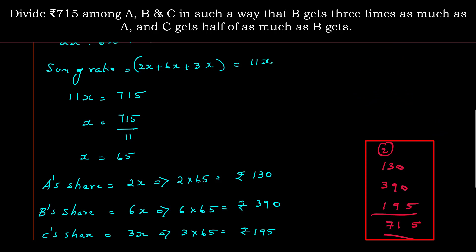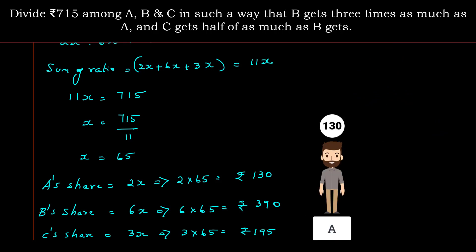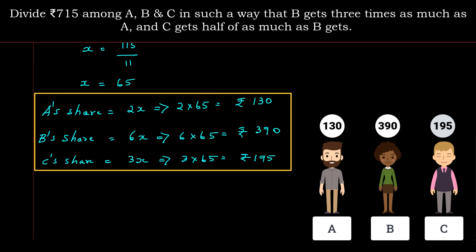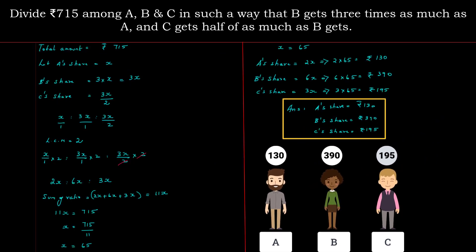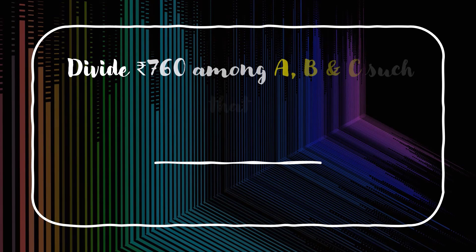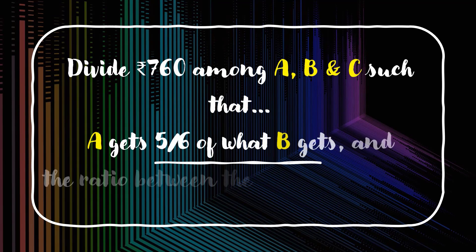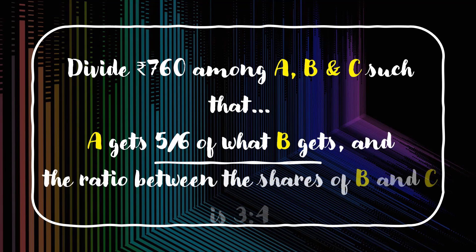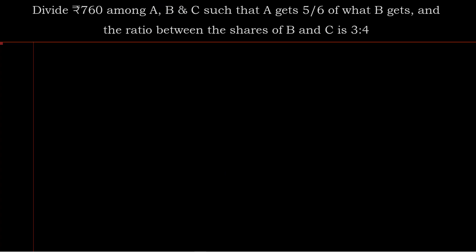The answer is correct. We have divided the amount as per the required ratio. Problem 3: Divide Rs. 760 among A, B, and C such that A gets 5/6 of what B gets and the ratio between the shares of B and C is 3 : 4.